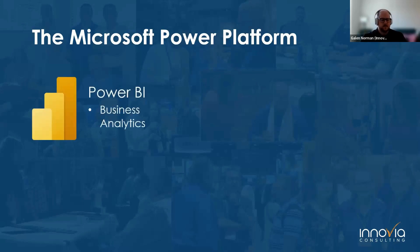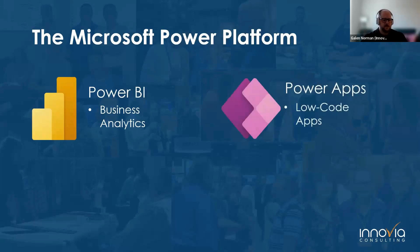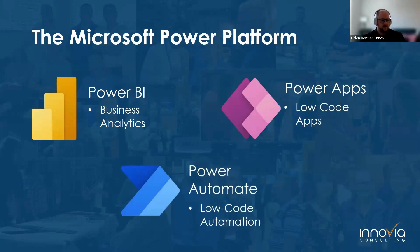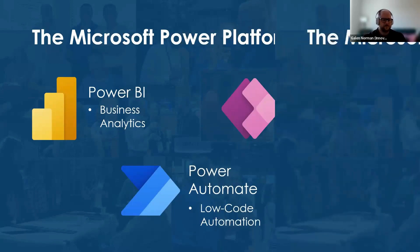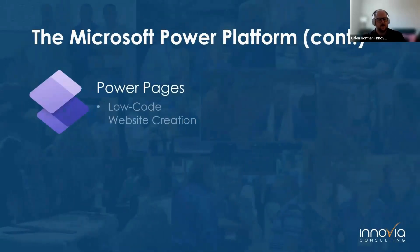Power BI is a business analytics tool that enables users to create and share reports and dashboards using visualizations to communicate business data. Power Apps is an application development tool that allows a user to build and share custom apps with low-code or no-coding required - the two types being Canvas apps and model-driven apps. Power Automate is a low-code tool that allows for automation of repetitive business processes. Power Pages allows a user to create low-code business websites and is the newest pillar, having previously been called Power Portals.